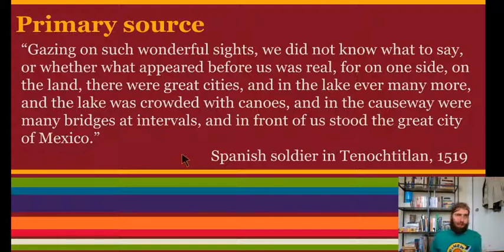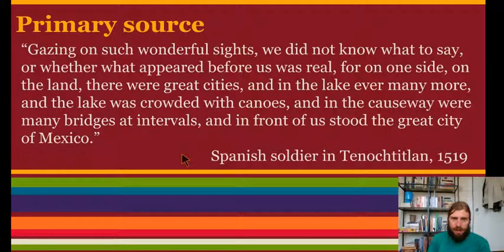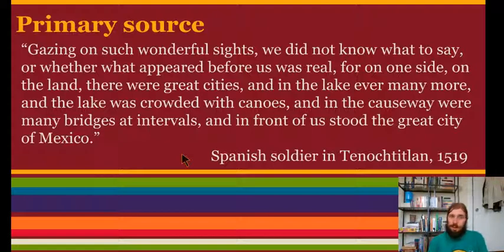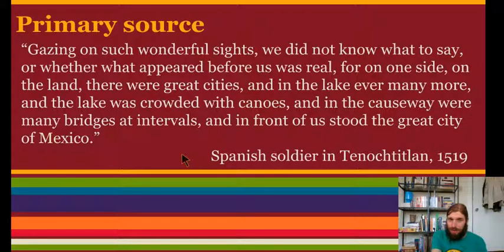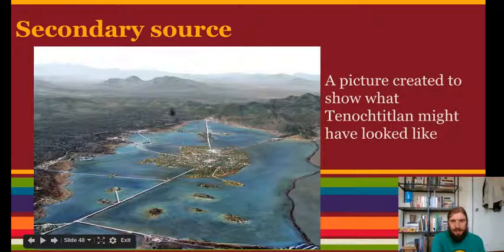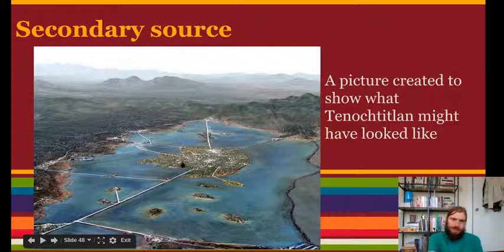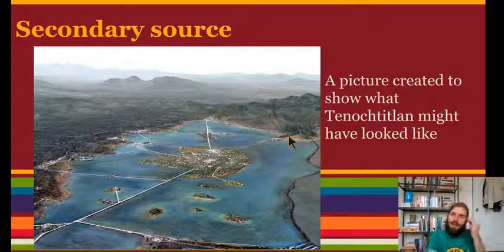Tenochtitlan was a really interesting place, so I want to read this primary source from someone who actually saw the city while it was still there. They described it: 'Gazing on such wonderful sights, we did not know what to say, or whether what appeared before us was real, for on one side on the land there were great cities, and in the lake ever many more. And the lake was crowded with canoes, and in the causeway were many bridges at intervals. And in front of us stood the great city of Mexico.' This was written by someone who actually saw the city. Since it's now destroyed, we use primary sources like this to imagine what it looked like. This picture was created based on passages like that one — we can see the bridges, the city in the middle of the lake, and the cities along the outside.